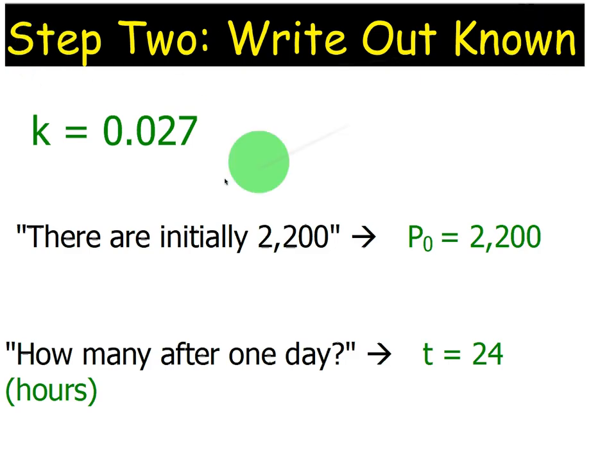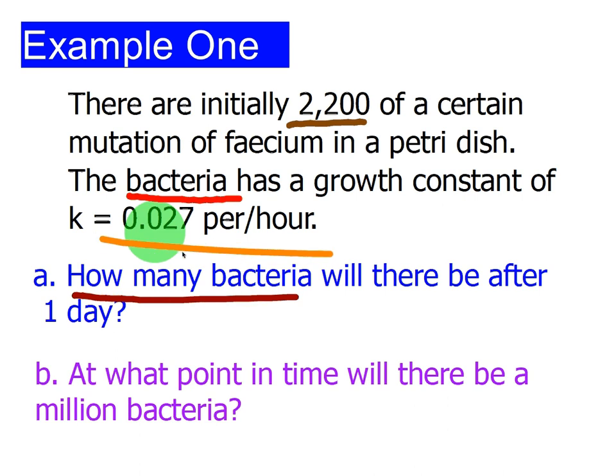Step two, we're going to write out what we know. We know that K is equal to 0.027. We know the initial population, P0, is 2200. How many will there be after one day? In fact, I didn't mention that originally. But one day, we want to write as 24 hours. And that's simply because when they gave us the rate, it said 0.027 per hour.